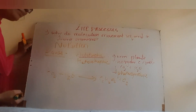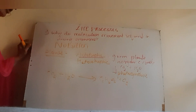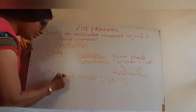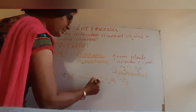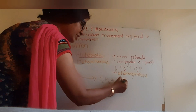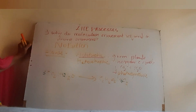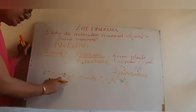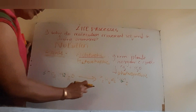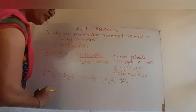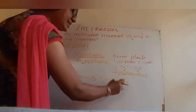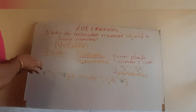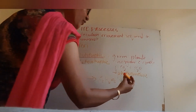Now let us balance the equation of photosynthesis. Six molecules of carbon dioxide and twelve molecules of water form one molecule of glucose, with the release of six molecules of oxygen along with six molecules of water.